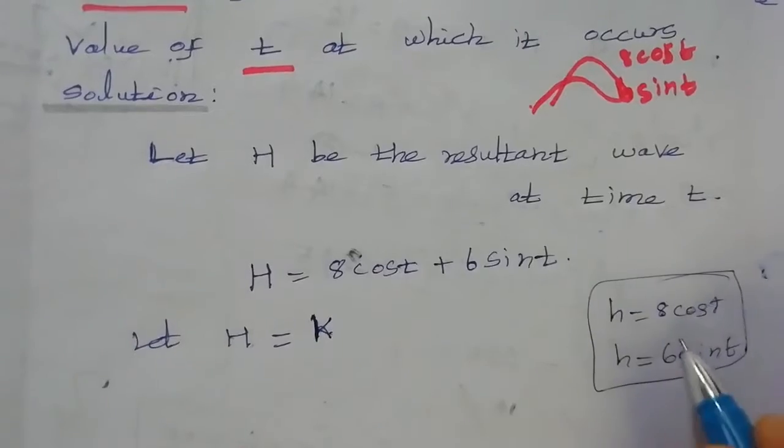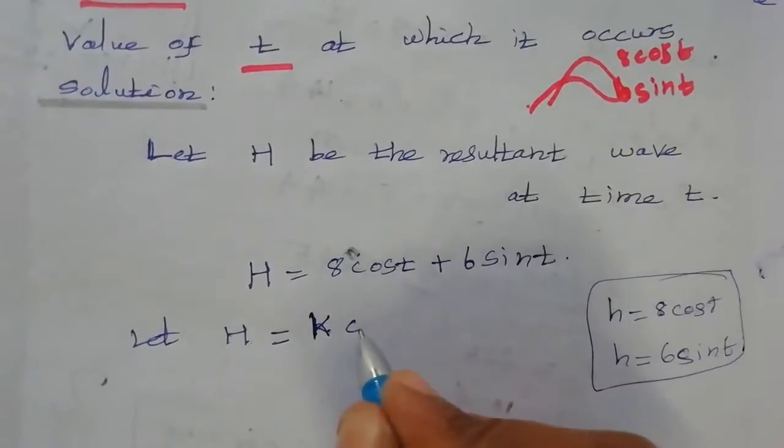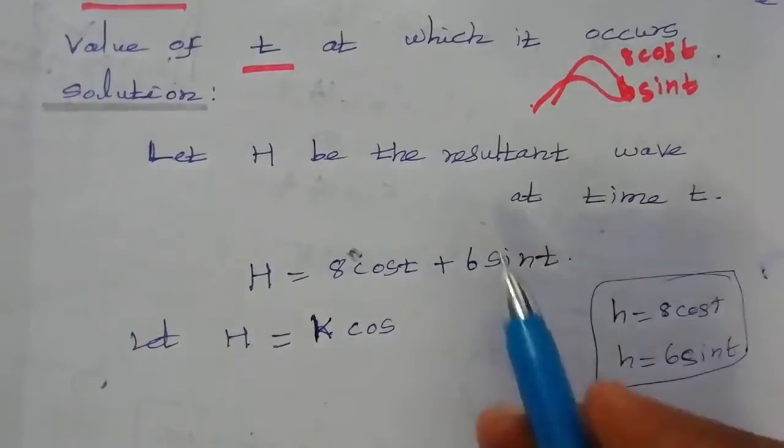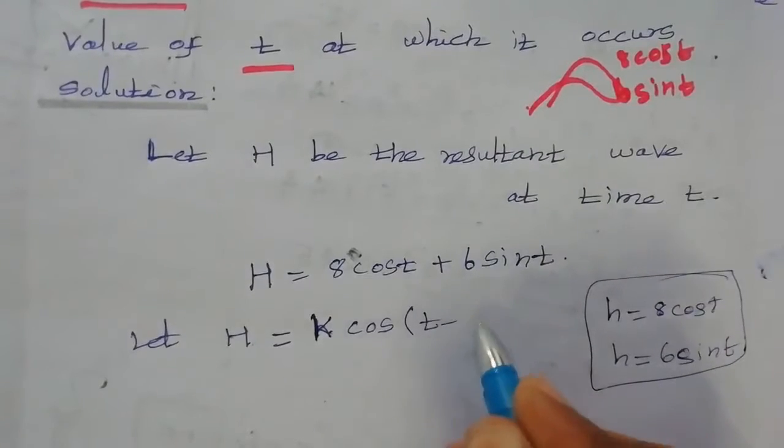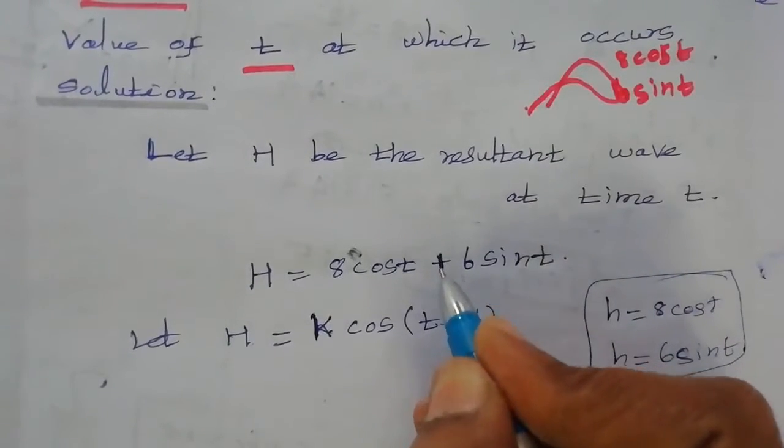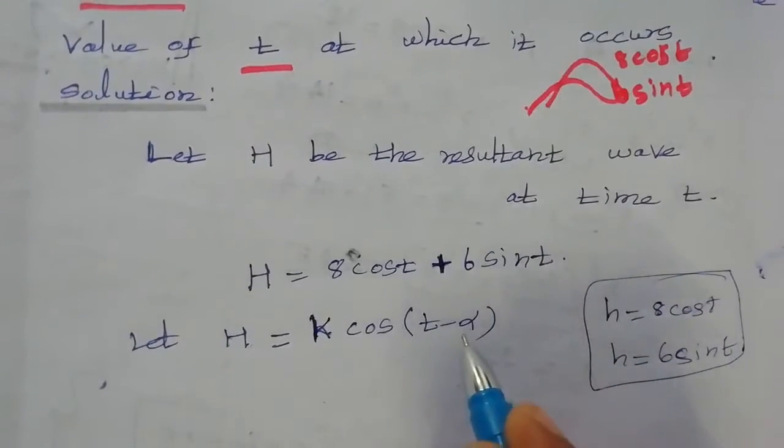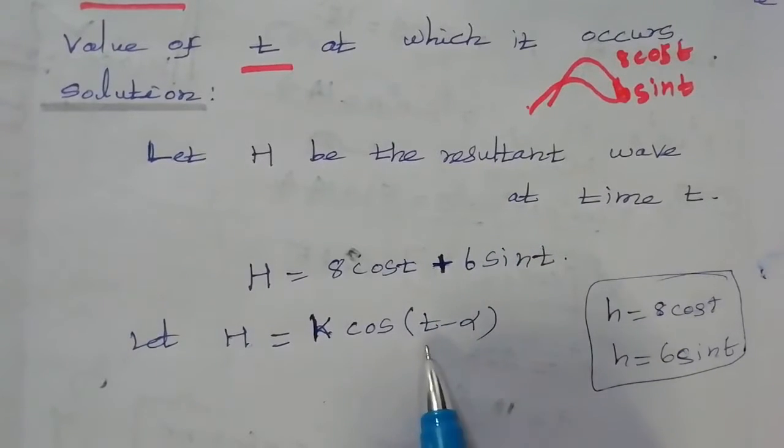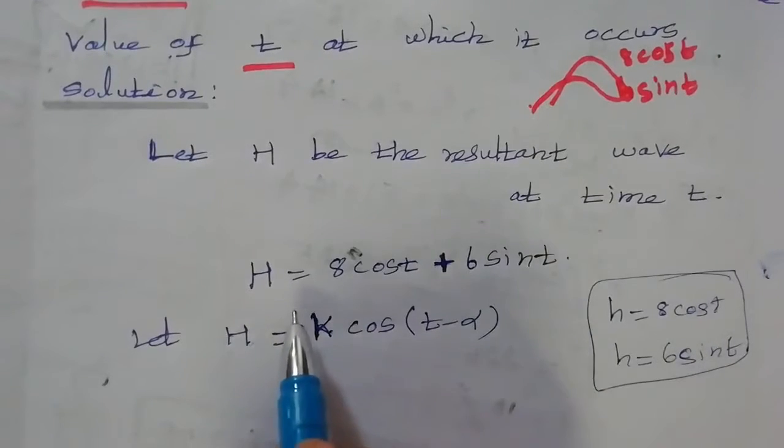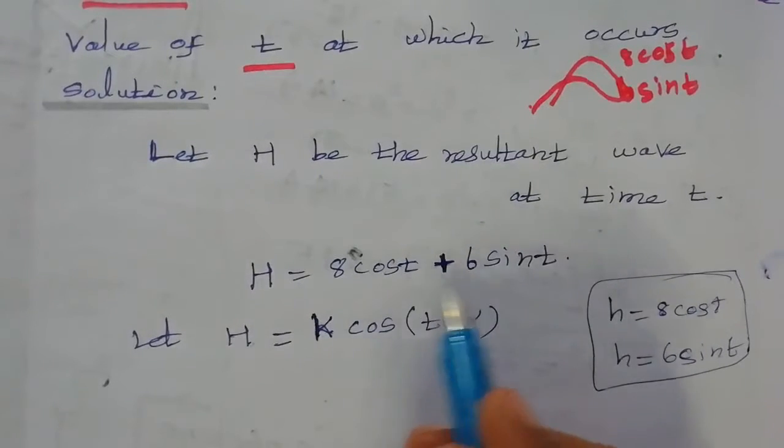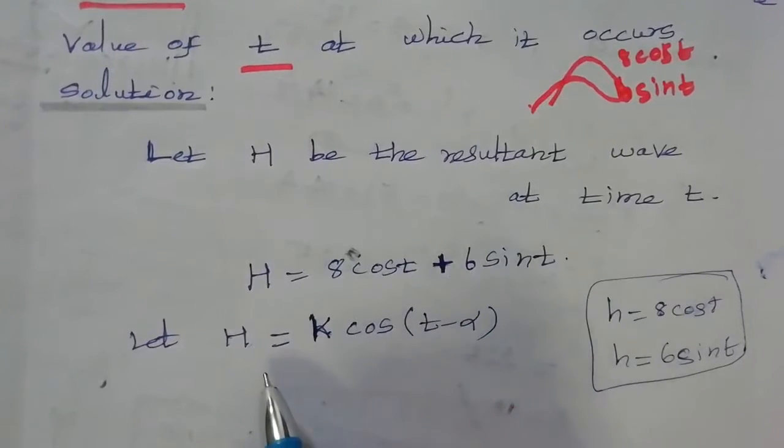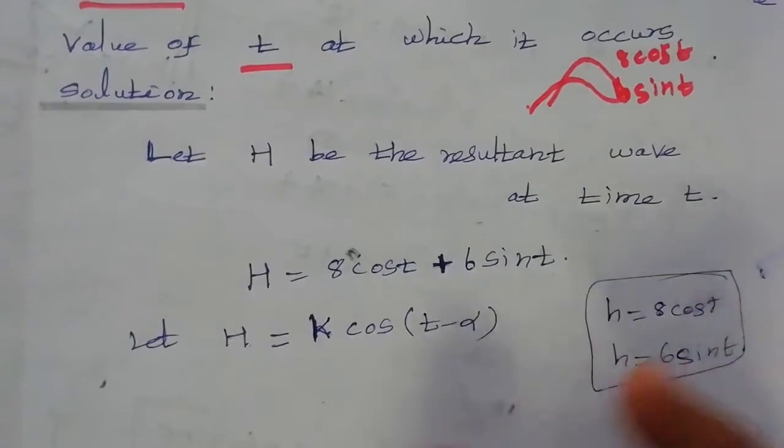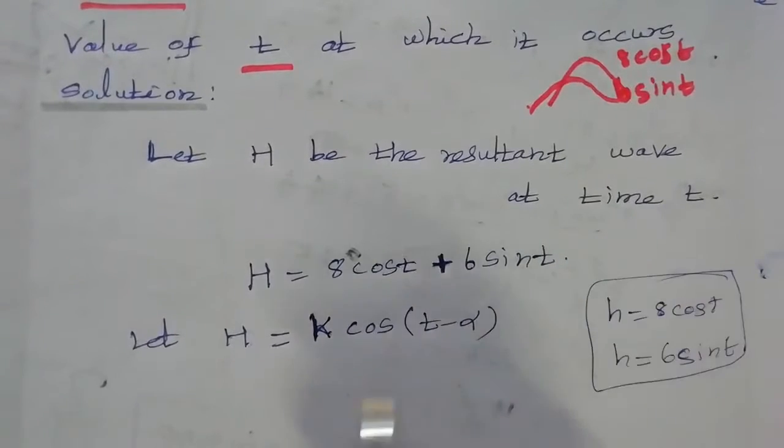We will assume that the result is k into cos. If we have t, we will write t minus alpha. We will use cos of a minus b. So we will write t minus alpha. Let's assume that the height of this format is k into cos t minus alpha.